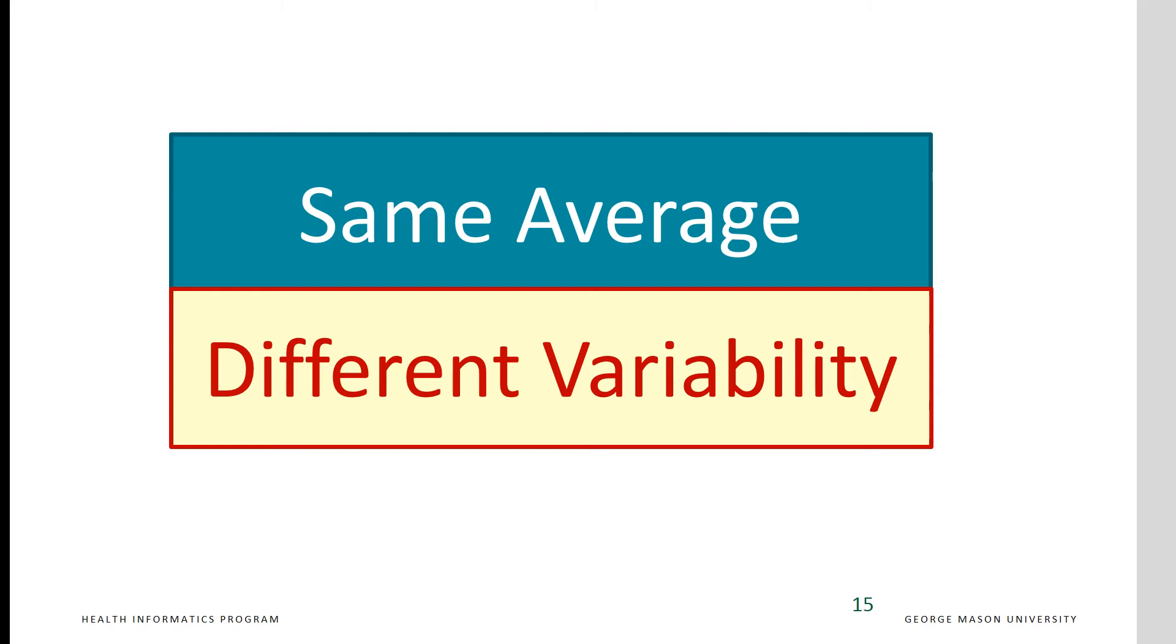Reporting only on average without an accompanying measure of variability may misrepresent a set of data. Two data sets can have the same average but very different variability.